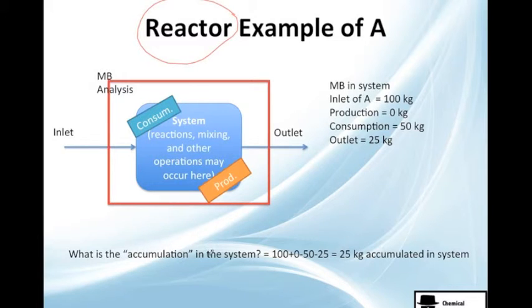So if I ask you what is the accumulation in the system, and I tell you I have inlet of A, kilos of A, it's 100. And I have a production of 0, I'm not producing A. Let's say probably is the reaction I told you before, A is converting to B, so I have no production.